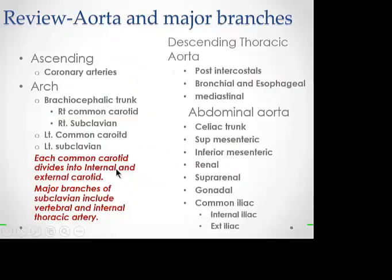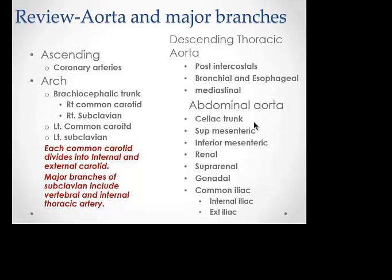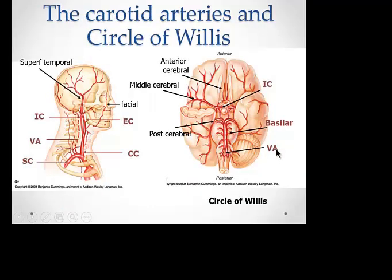To summarize so far: the ascending aorta and arch of the aorta give off the coronary arteries and arch branches. The common carotid — note it always divides — gives off the internal and external carotid arteries. The descending thoracic aorta gives off the thoracic branches just described. Below that, the abdominal aorta gives off all its branches, which we will examine in detail.